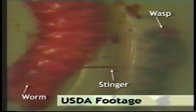Bollworms, budworms, armyworms, and other caterpillars are attacked by other, larger parasitic wasps. These wasps are not commonly seen in the field. They can be best detected by collecting larvae and rearing them to determine if a parasite emerges.